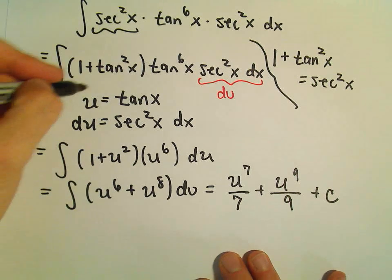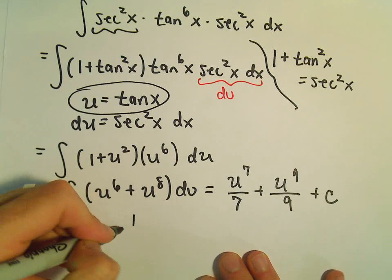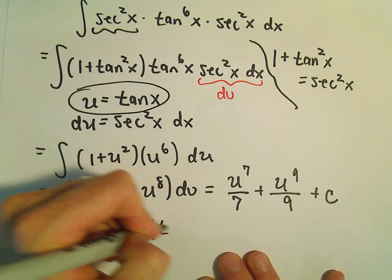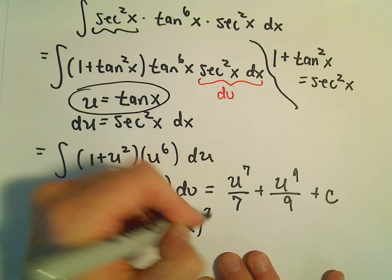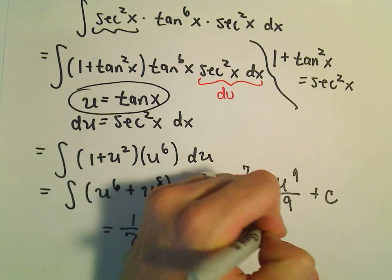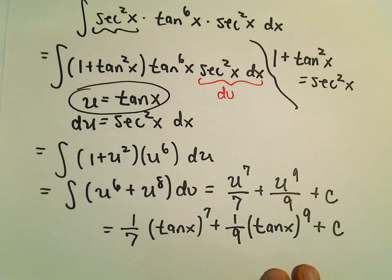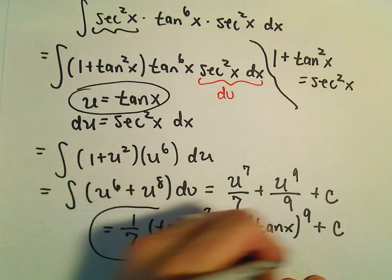And again, last but not least, we'll just drop our original substitution back in. So we'll get 1 seventh tangent of x raised to the seventh plus 1 ninth tangent of x raised to the ninth plus c. And now we are finished.